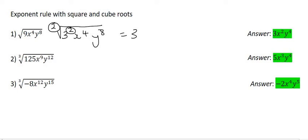We said that the square root of 9 was 3 anyway. Now we're going to look at the x to the power of 4, so it's going to end up being x to the power of 2, because we say 4 divided by 2. And then y to the power of 8 is going to become y to the power of 4, because you say 8 divided by 2.